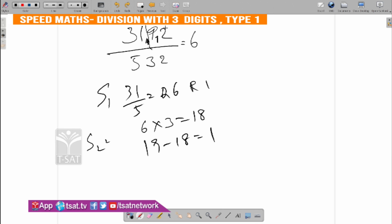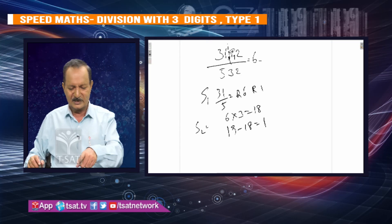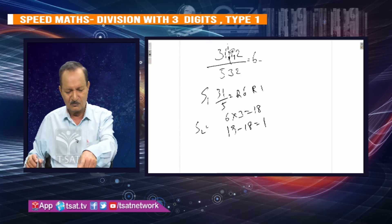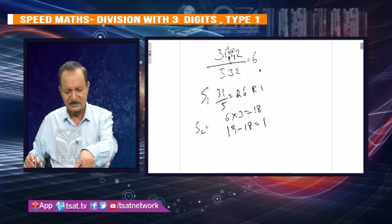12 is 12. 12 minus 12 is 0, so the answer is 6. 5, 6, 3.